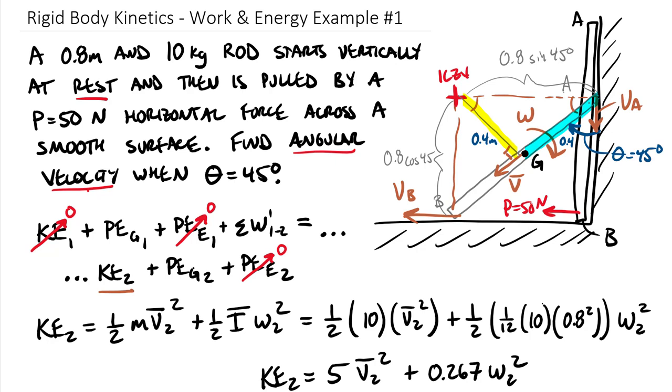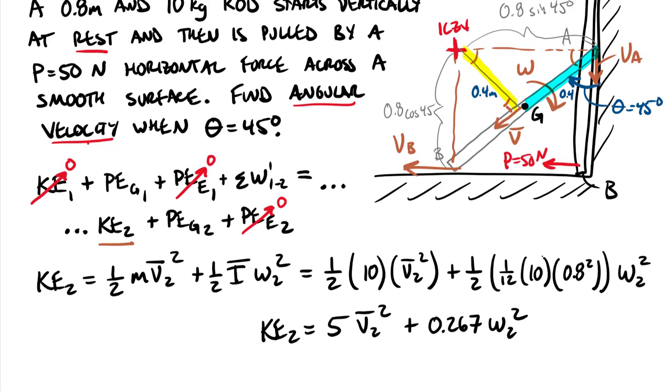This is another reason velocity-based problems are easier than acceleration-based. In an acceleration-based problem, you'd be forced to use vector analysis to figure out acceleration of these various points. But here in a velocity-based problem, we can use ICZVs which are much quicker.